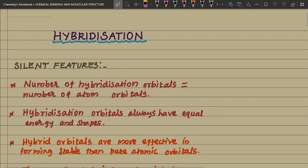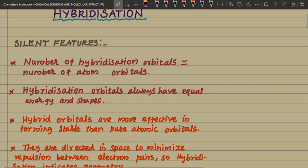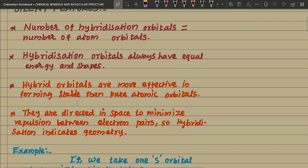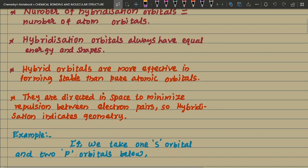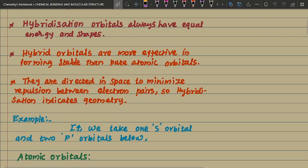Welcome to Chemistry Blambam. Today we will see hybridization — the salient features of hybridization. All are important points, please keep them in mind. First: the number of hybridization orbitals equals the number of atomic orbitals combined. Hybridized orbitals always have equal energy and equal shapes. Hybrid orbitals are more effective in forming stable bonds than pure atomic orbitals. They are directed in space to minimize repulsion between electron pairs, so hybridization indicates geometry.